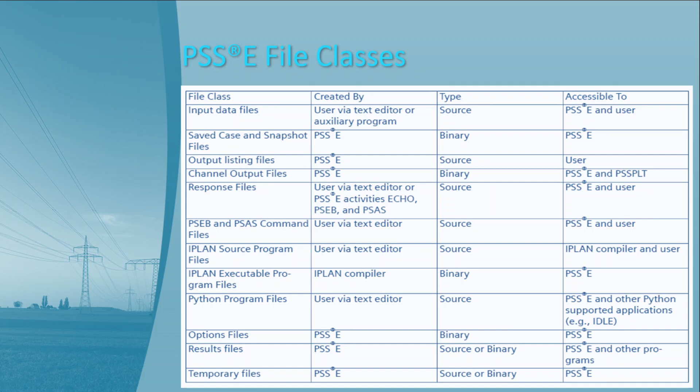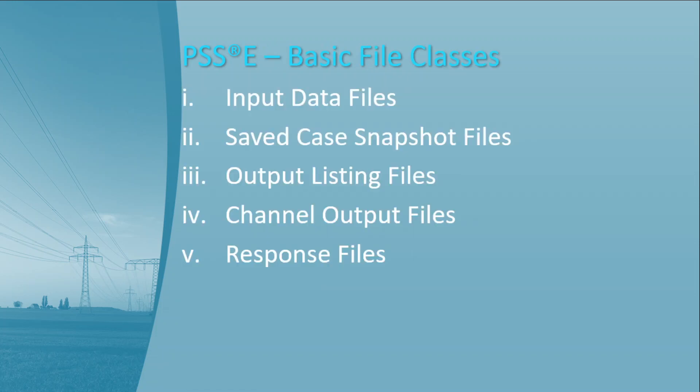The classes of files used by PSSE are summarized in a table. With the exception of temporary files and PSSE option files, the user may assign any name to any file. Among all files, there are five most important ones: input data files, save case snapshot files, output listing files, channel output files, and response files such as Python scripting or IDV files.